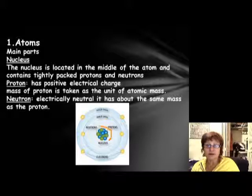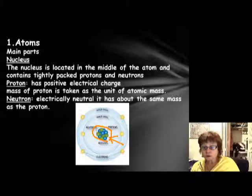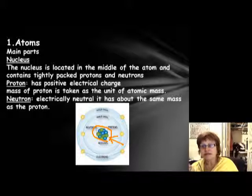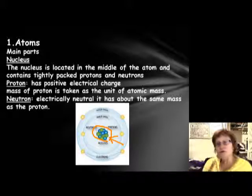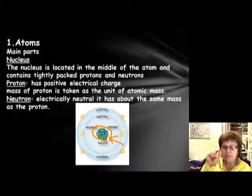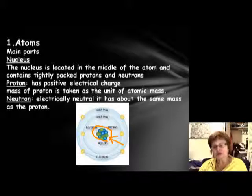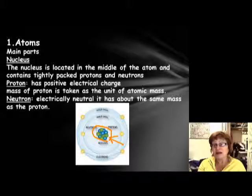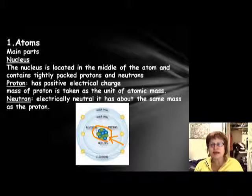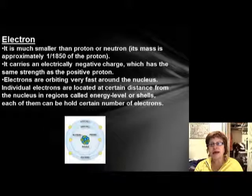Here's the atom. It has two main parts. One is the nucleus, which has two main particles: the proton and the neutron. The proton is the unit of atomic mass — that's important — and it has a positive charge. The neutron has about the same weight as the proton but has no charge; it's neutral.